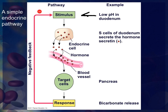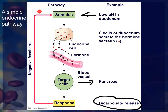S cells in the duodenum will secrete a hormone called secretin, which gets released into the blood and carried to the target cell — in this case, the pancreas. The pancreas will then release bicarbonate, which neutralizes the acidic pH and raises it back up to pH 7. That neutralization of pH is the response, and this is the negative feedback mechanism.